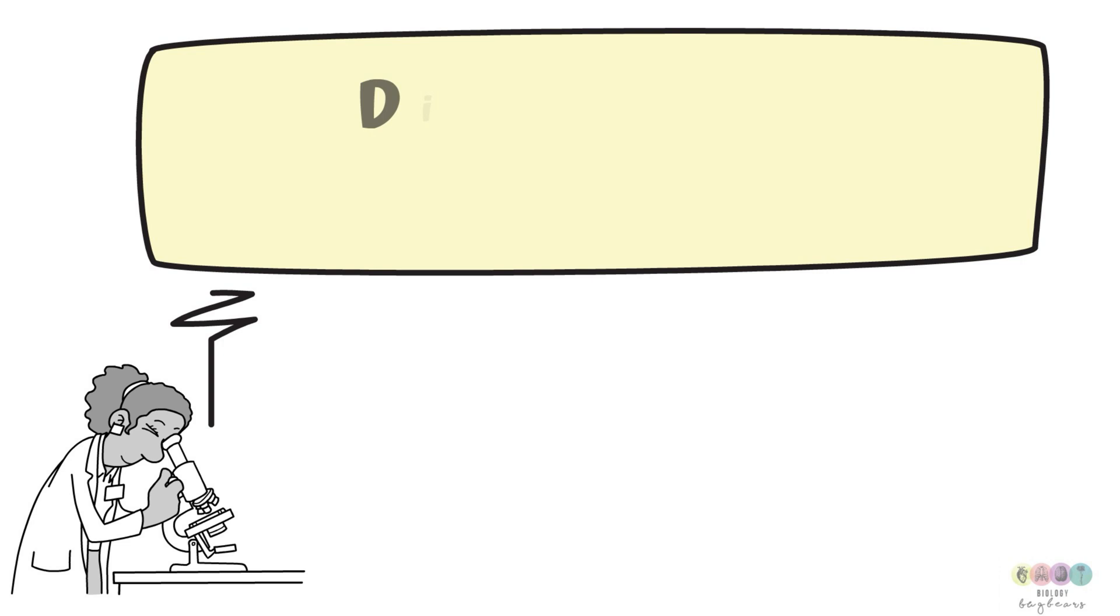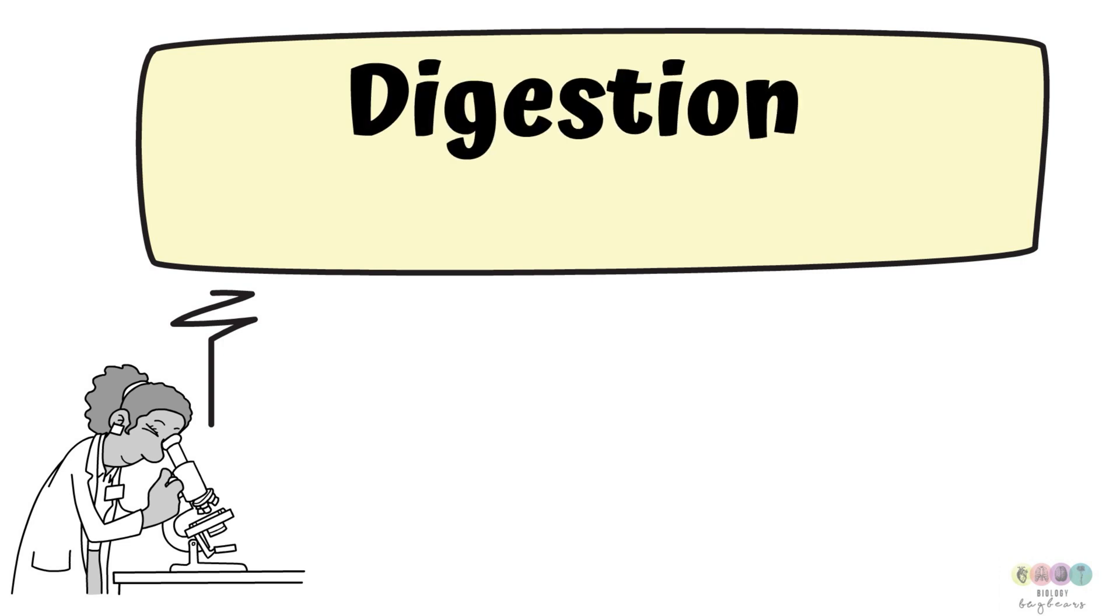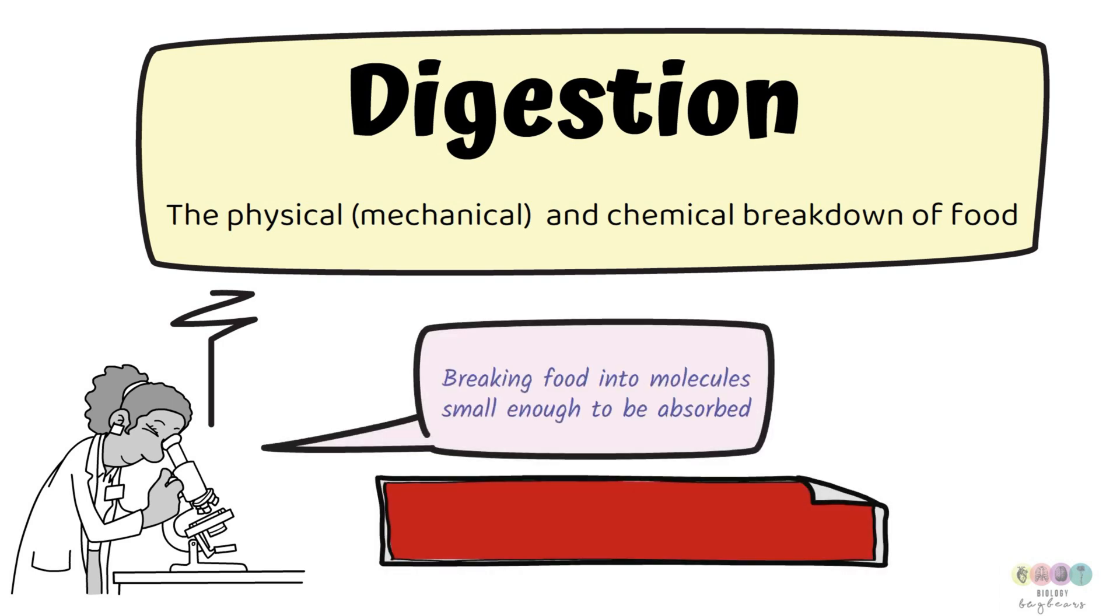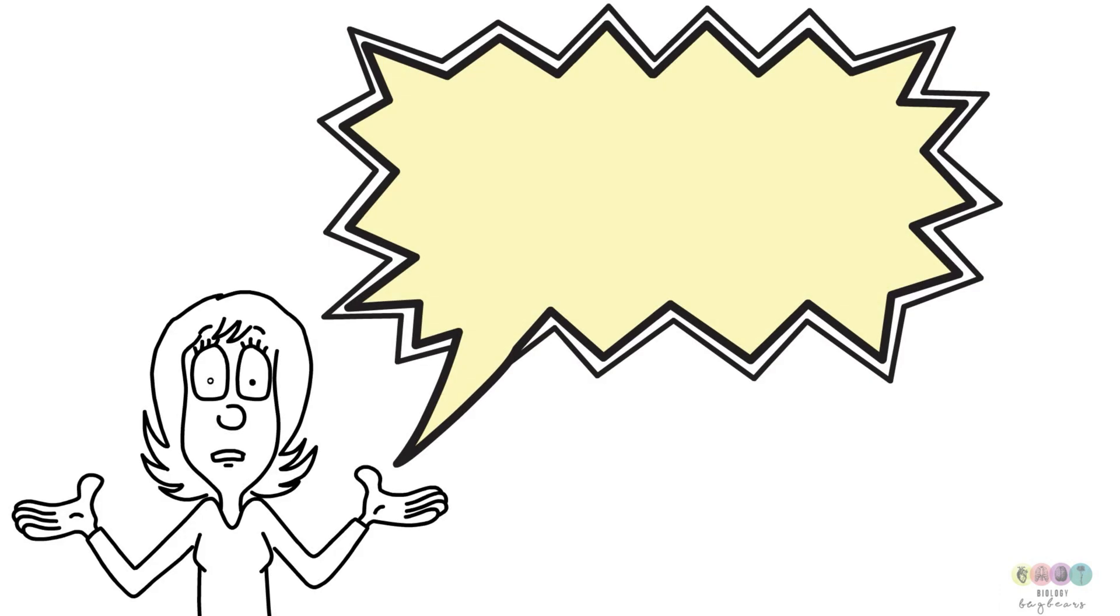We'll start by defining digestion. Digestion is the physical, often referred to as mechanical, and chemical breakdown of food. Basically digestion is breaking down food into molecules that are small enough to be absorbed into the body. This means those molecules then can pass into the blood and then onwards into cells. Another important definition is nutrition.